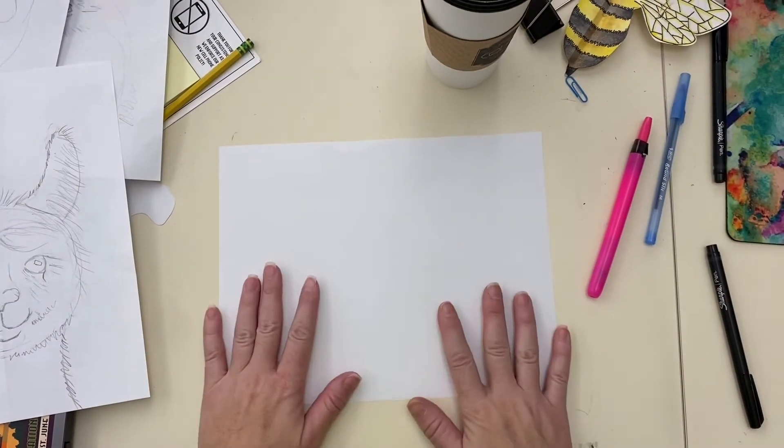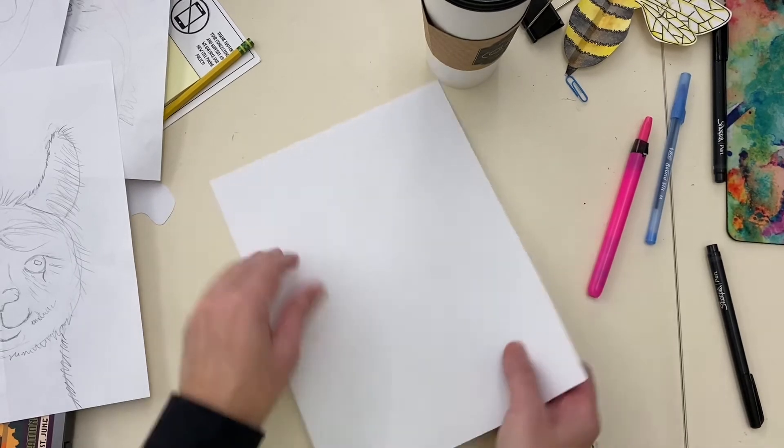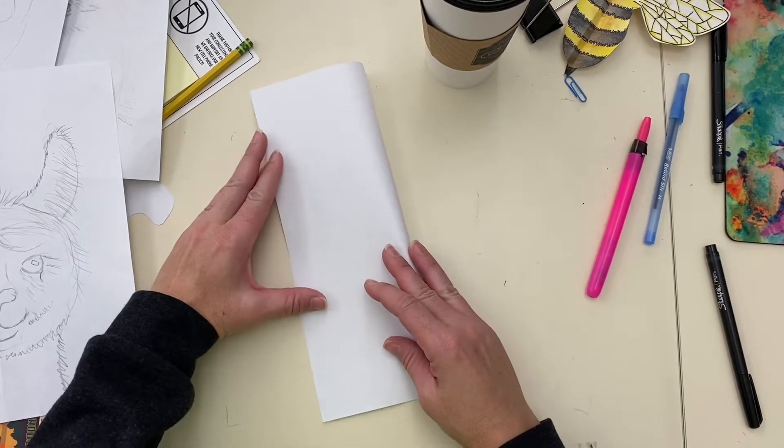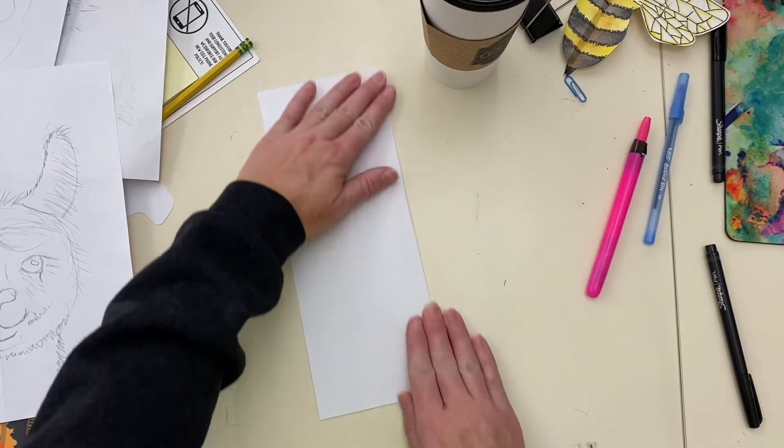So once you get your paper you want to fold it in half. Composition is really important so you want to be able to fill up the paper with your drawing.